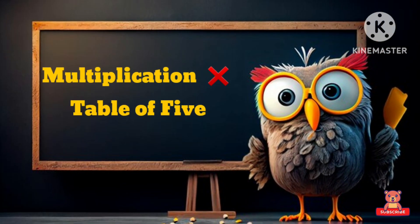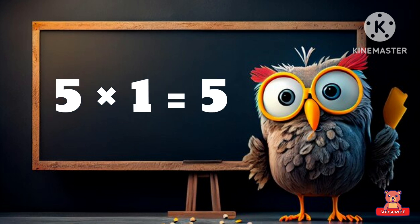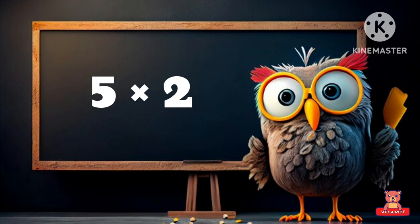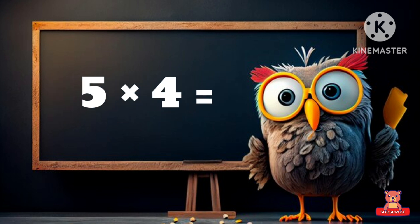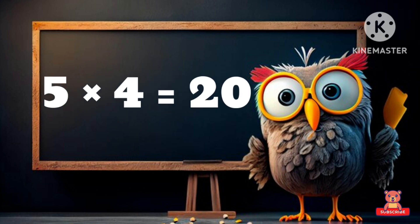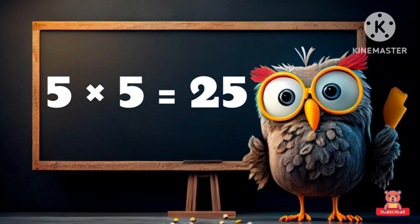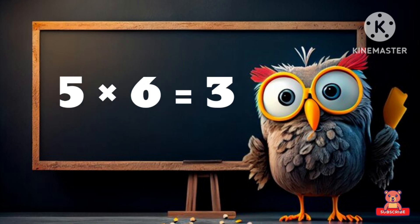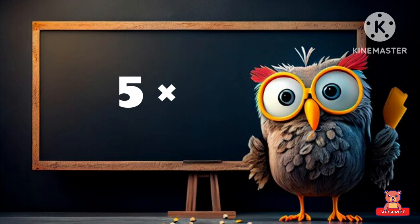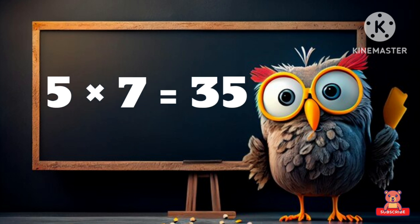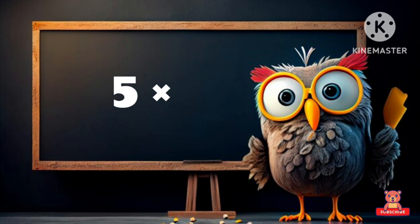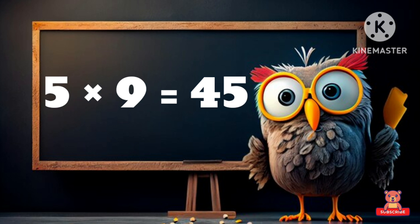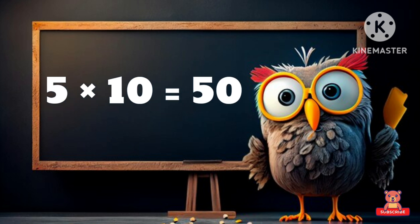Multiplication table of five. Five one's a five, five two's a ten, five three's a fifteen, five four's a twenty, five five's a twenty-five, five six's a thirty, five seven's a thirty-five, five eight's a forty, five nine's a forty-five, five ten's a fifty.